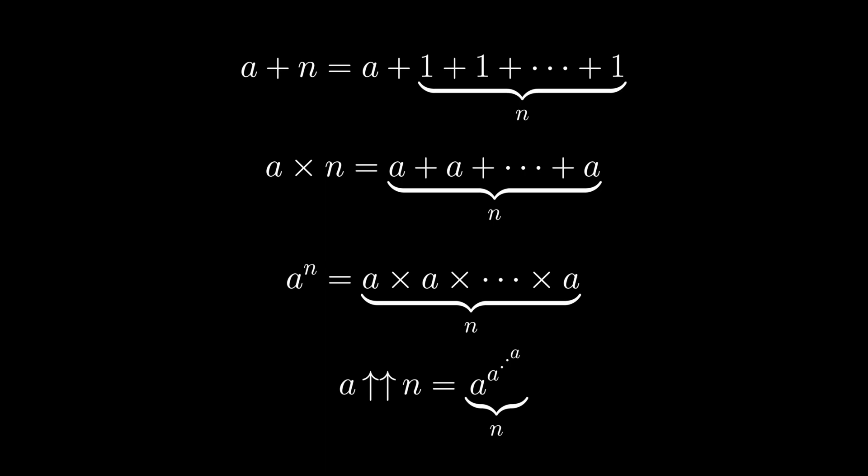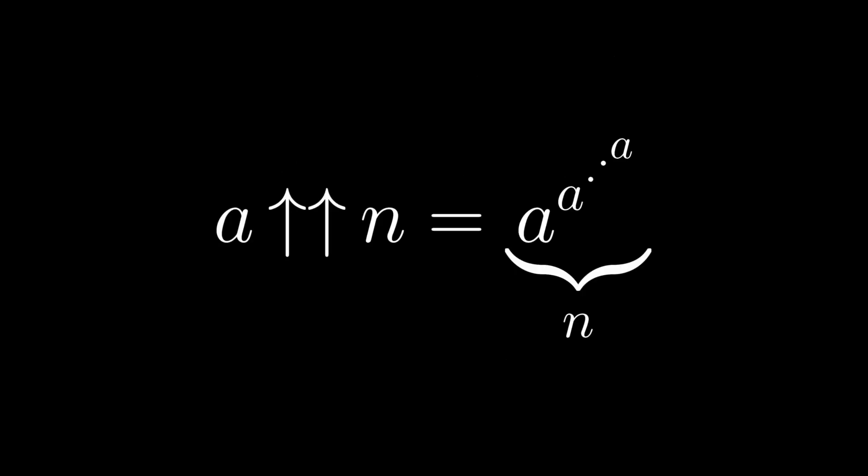Indeed, the name Tetration comes from the fact that it is the fourth such operator in this sequence. There is no absolutely standard notation for Tetration, though I like this one with two up arrows, that was defined by the mathematician and computer scientist Donald Knuth. We refer to the left-hand operand as a base, and the right-hand as a height.